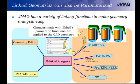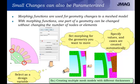Linked geometries can also be parametrized. JMAG has a variety of linking functions to make geometry analysis easy — including JMAG's Geometry Editor, JMAG Express, and third-party programs such as SolidWorks, CATIA, ProEngineer, and NX. Changes made within JMAG's parametric function are then applied to the different CAD geometries. Small changes can also be parametrized using a morphing function, which is used for geometry changes to a meshed model. With morphing, one part of a geometry can be modified without changing the number of nodes or elements — for example, modifying the bridge distance from a thinner to a thicker bridge without changing the elements.